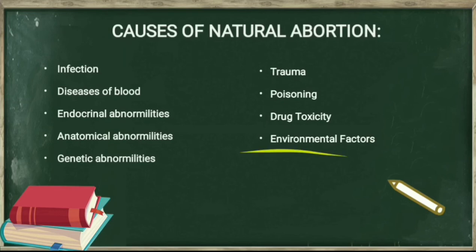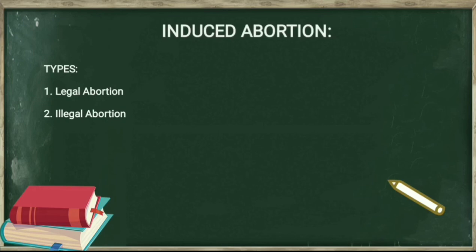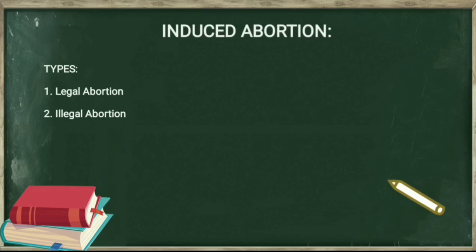Induced or artificial abortions are subcategorized into two parts: legal abortion and illegal abortion. Legal abortions are those permitted by law in India, while illegal abortions are those not permitted by law. Legal abortion is permitted up to a period of five months during pregnancy, and later if special circumstances exist. Illegal abortions are those committed after five months. In India, this is governed by the Medical Termination of Pregnancy Act.